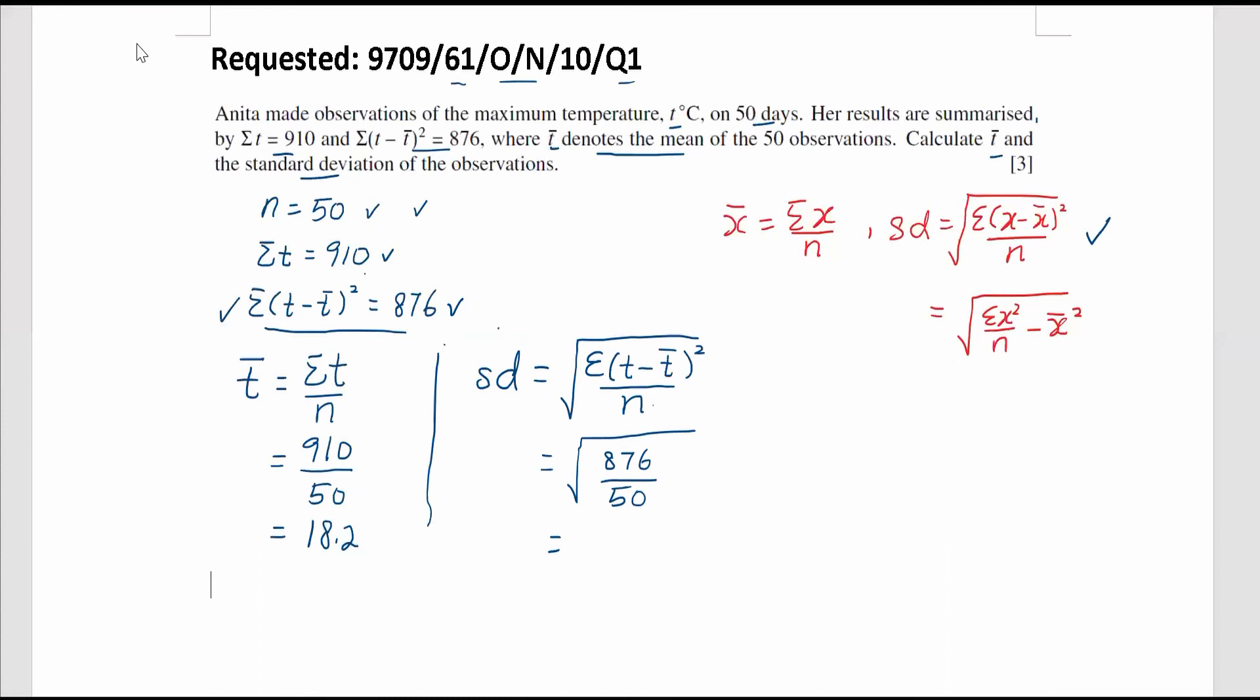Using calculator, we find out the answer to be 4.19, kept to three significant figures. So that will be the answer of the mean and the standard deviation for these particular questions.